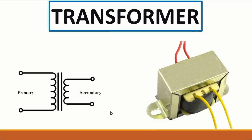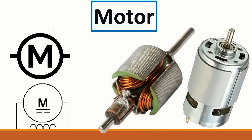The purpose of the transformer is to transfer energy from one side to the other. Then we have the motor. This is basically the motor, and here is its symbol — it could be this symbol or this symbol. The motor contains two major parts: a stator and a rotor.